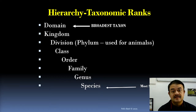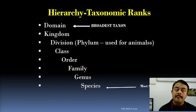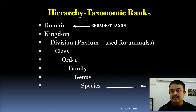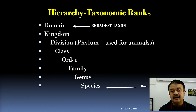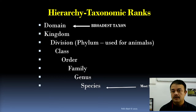Right now, we are following the six kingdom classification of Cavalier Smith from Oxford. Within the next few years, we may have a completely different classification system as new evidence comes in.